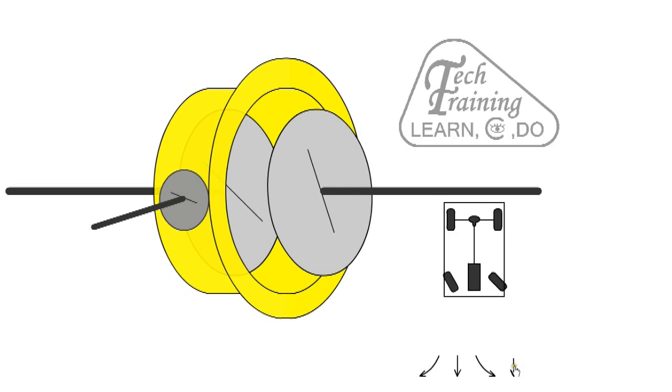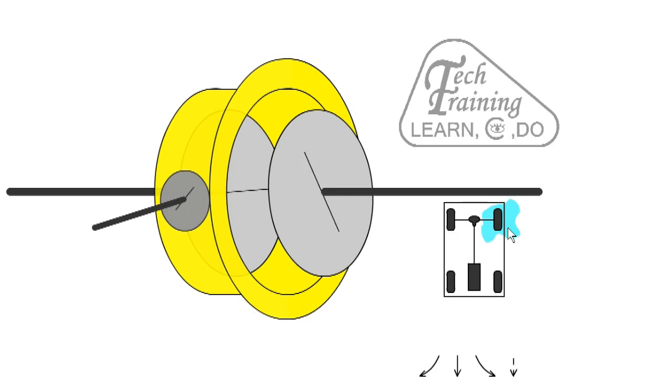If one wheel has poor traction, for example because of ice, all the torque will be transmitted to that wheel. It will spin and the car will not move. This is a disadvantage of the open differential.